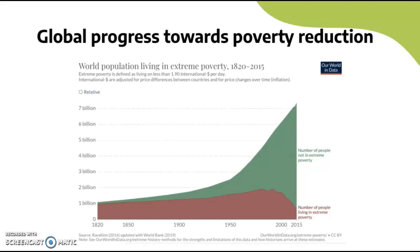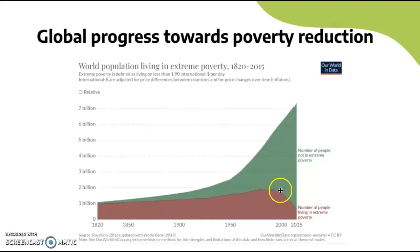We need to know the global progress towards poverty reduction as a trend. From this graph, we can see that from 1820 to 2015, there's clearly been a rise in the number of people not in extreme poverty. For people living in extreme poverty, there was a rise, and then from around the 1990s it began to fall, and from about 2000 onwards it fell significantly. Just be aware of this general trend, and note that this is specifically for extreme poverty — people earning less than $1.90 a day.